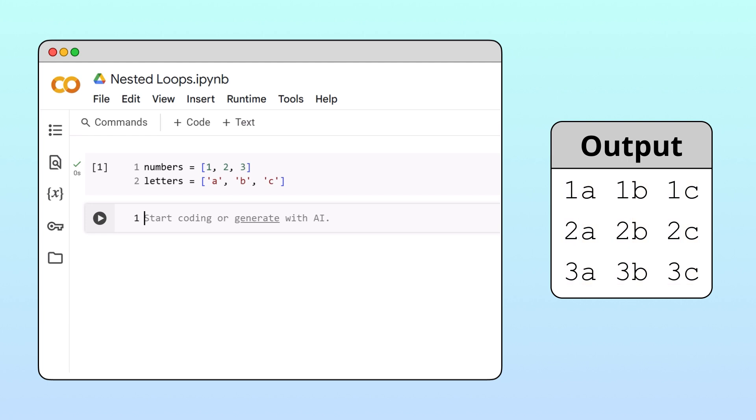Your first instinct might be to create this pattern using a single for loop that iterates through the numbers list. Inside the loop, you might print the current number along with the first letter, the second letter, and the third letter in the letters list.